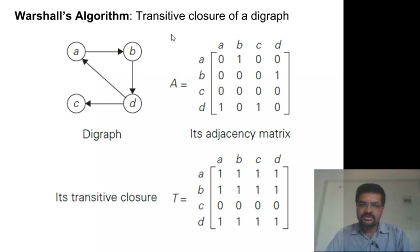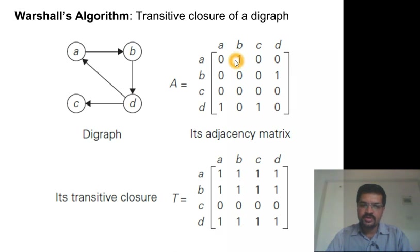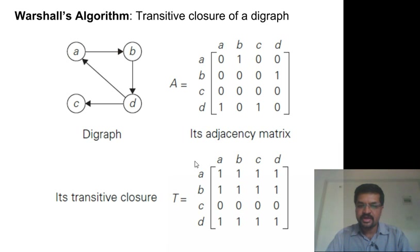Warshall's algorithm finds the transitive closure of a directed graph. Here is a digraph, and we represent digraphs as an adjacency matrix. Floyd's algorithm transforms this adjacency matrix into another matrix which is the transitive closure. In the adjacency matrix, there is a 1 at i,j if and only if there is an edge from i to j. In transitive closure, there is a 1 at i,j if and only if there is a path from i to j — meaning j can be reached from i. So that is based on the transitivity property.